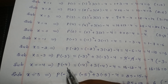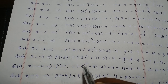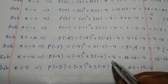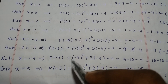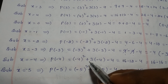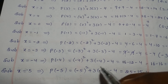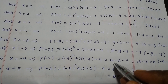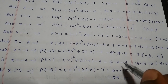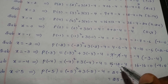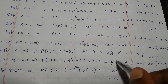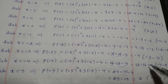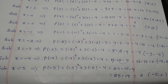Substituting x is equal to minus 4: minus 4 square plus 3 into minus 4 minus 4. Minus 4 square is 16, plus into minus is minus, 3 times 4 is 12, minus 4. The two negative values add to 16; so 16 minus 16 is 0. The point is minus 4 comma 0.